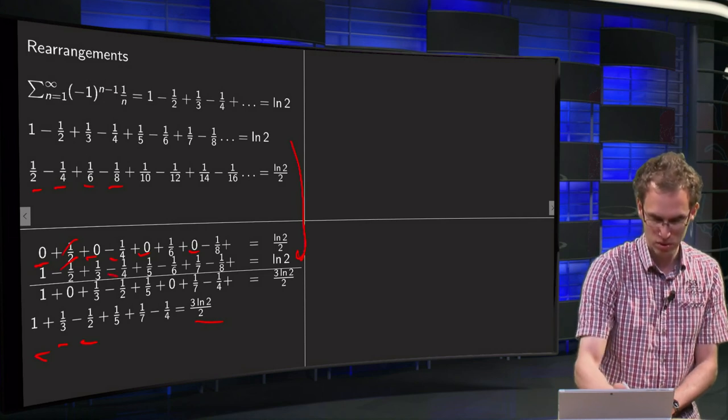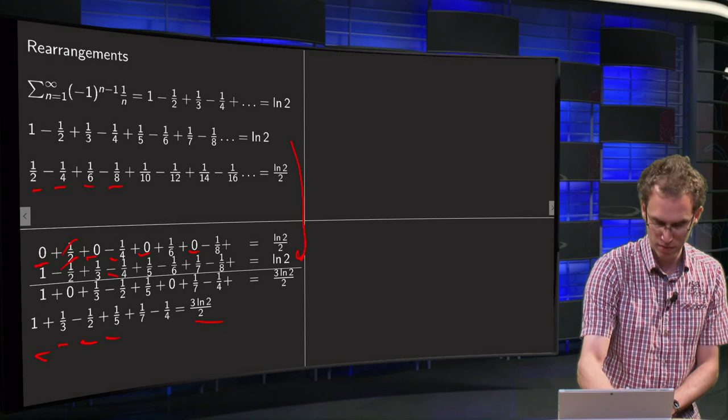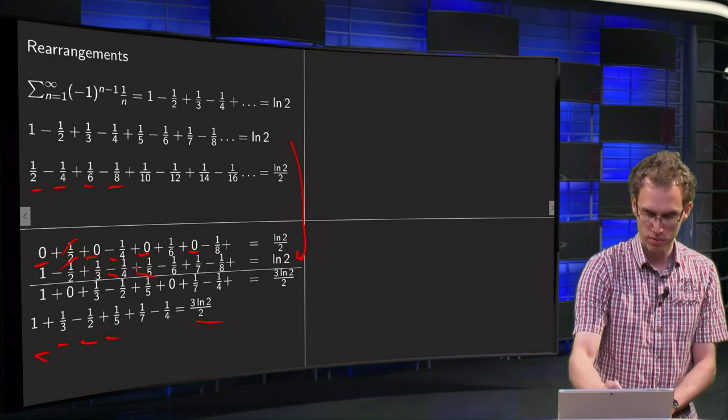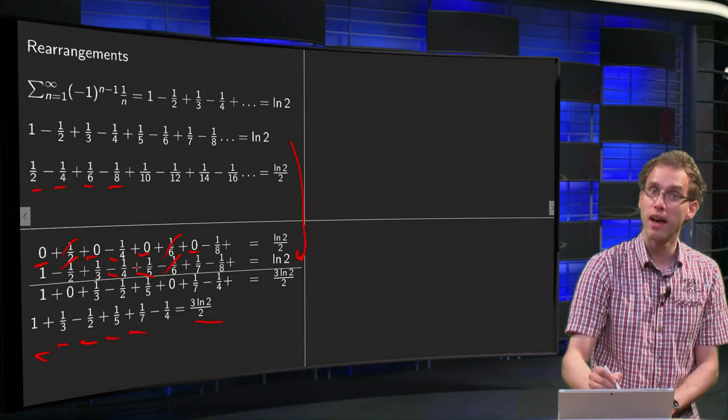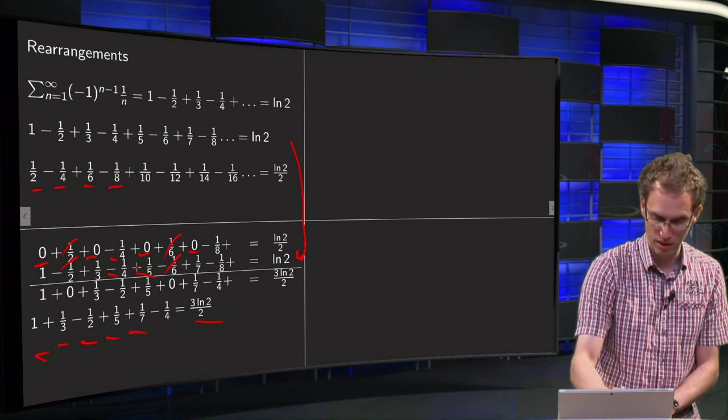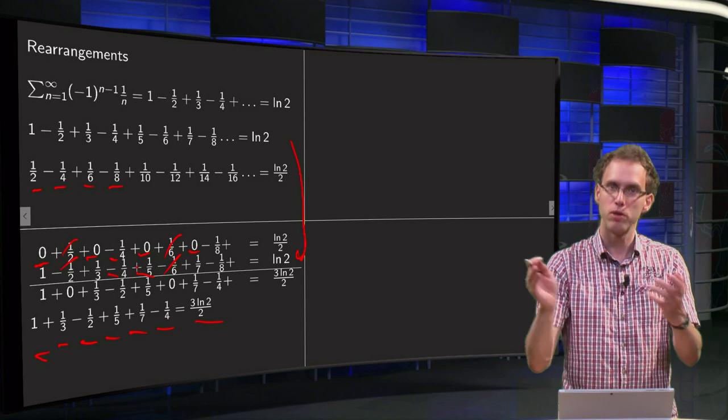Then we have those. Then the +1/5 from over here. +1/6 - 1/6 cancels out. I get a +1/7. And -1/8 - 1/8 equals -1/4 plus much more terms.